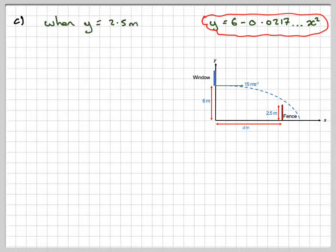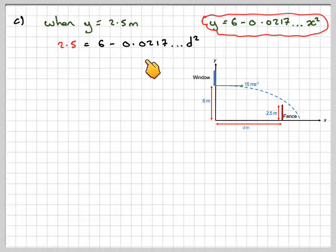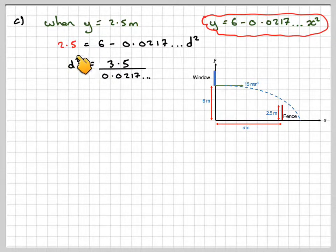When y is equal to 2.5, we've got 2.5 is equal to 6 minus 0.0217 times x squared. But x in this case is d. So d squared will be 3.5, that's 6 minus 2.5, over 0.0217. Make sure you haven't used a rounded off value. So that will give you that d gives you 12.677.